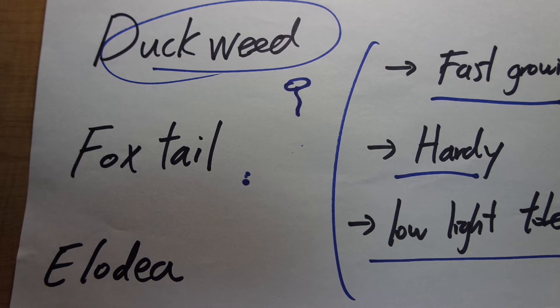I found duckweed to multiply like they double almost like every week, even more than double. So that's how fast they grow. They're definitely the fastest growing aquarium plant that I have seen. So they are definitely the best in terms of filtration capacity.